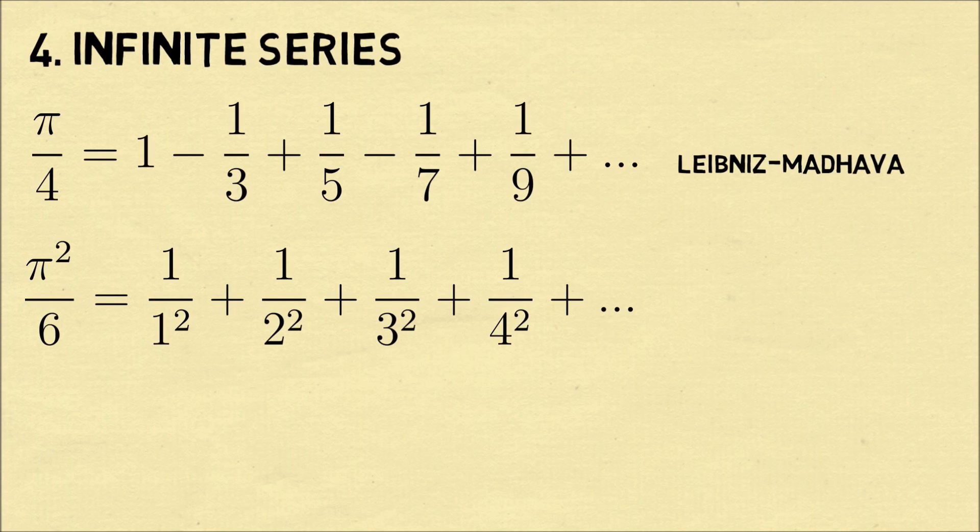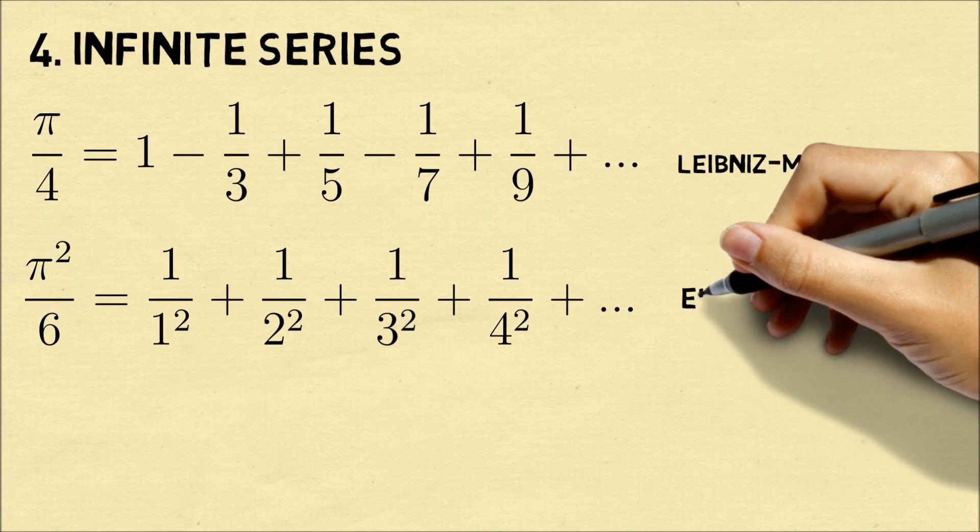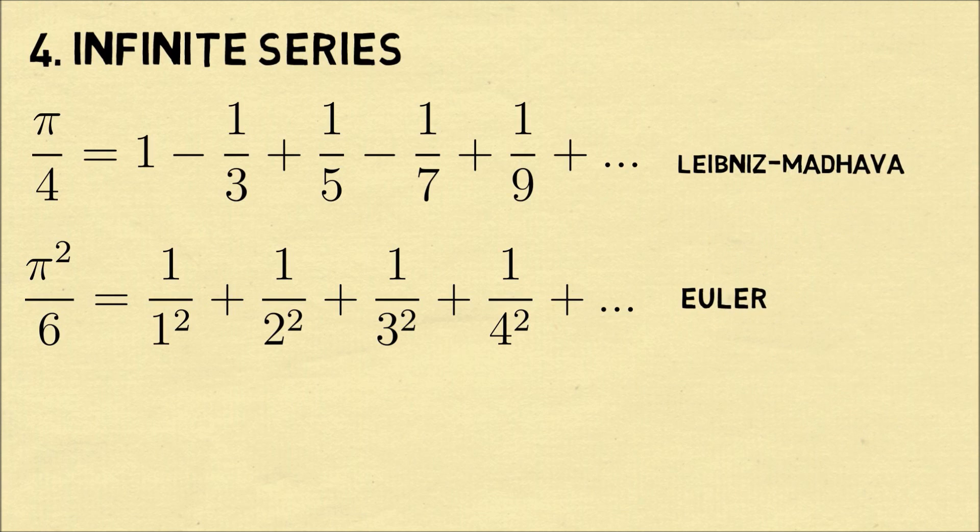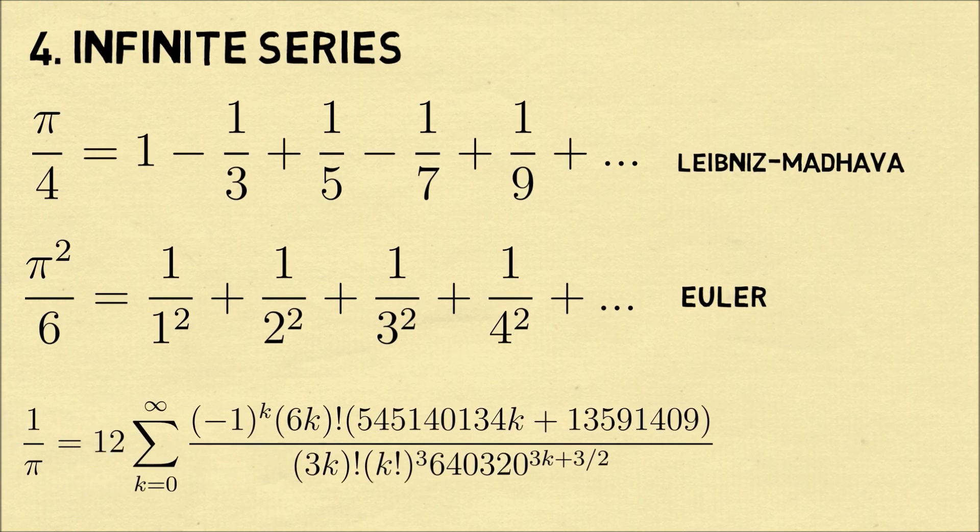Another formula is pi squared over 6 is equal to 1 over 1 squared plus 1 over 2 squared plus 1 over 3 squared and so on. This formula was found by Euler and it's a beautiful relationship between the numbers and pi.